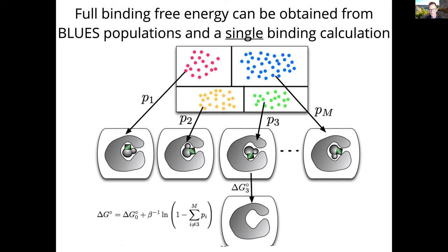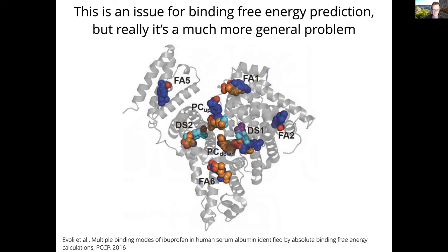This is a real problem in practice. Here's a bunch of different ways that ibuprofen can bind to human serum albumin — a key protein in your bloodstream — a bunch of different places it can fit. And here's another example: HIV integrase, a target for HIV drugs. A single pink ligand can bind to this protein in six to eight different places.